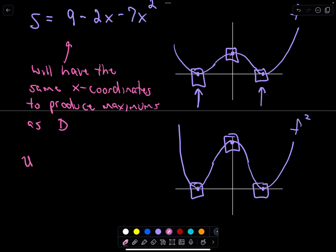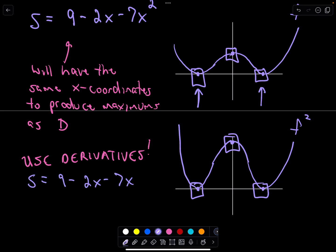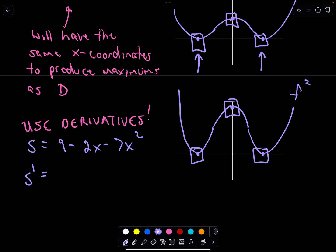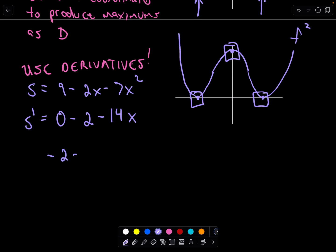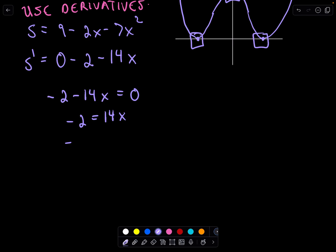So now let's use derivatives. We've got s equals 9 minus 2x minus 7x squared. The derivative of 9 is 0, the derivative of negative 2x is negative 2, and the derivative of negative 7x squared is negative 14x. So our derivative is negative 14x minus 2. Setting that equal to 0 and solving: adding 14x to both sides and dividing by 14 gives x equals negative 1 over 7.